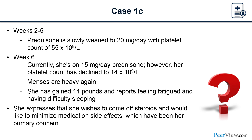Back to our case: on weeks two through five, prednisone is slowly weaned to 20 mg per day and her platelet count is 55,000. By week six, the dose is at 15 mg, but her platelet count drops to 14,000 and her menses become heavy again. She is gaining weight, feeling fatigued, having difficulty sleeping — all distressing side effects of steroids. She expresses a strong desire to come off steroids and minimize medication side effects.